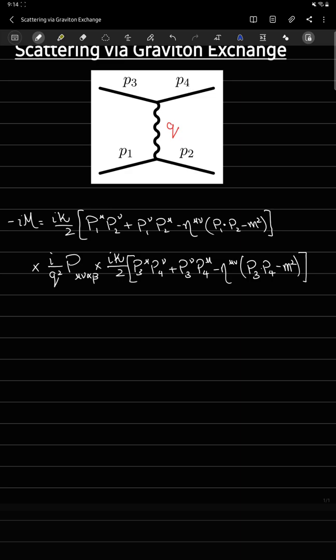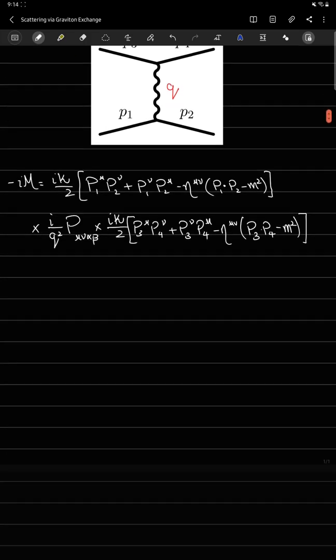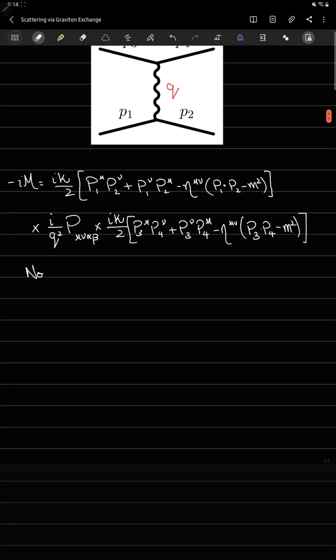This is the amplitude for this process where two scalar particles are interacting with the exchange of graviton. Now if I review this in a non-relativistic limit, what happens in that case?